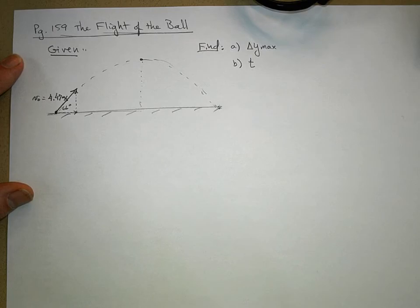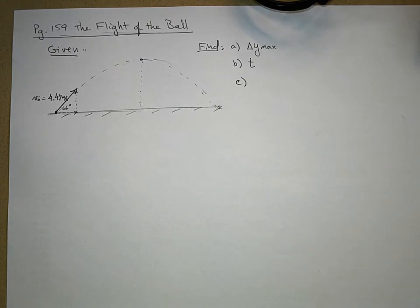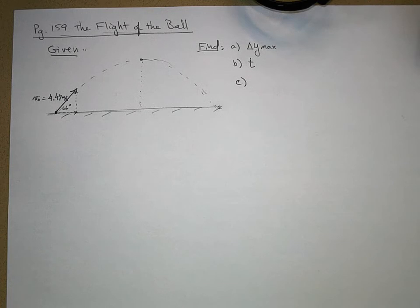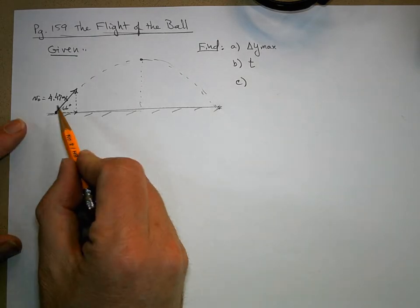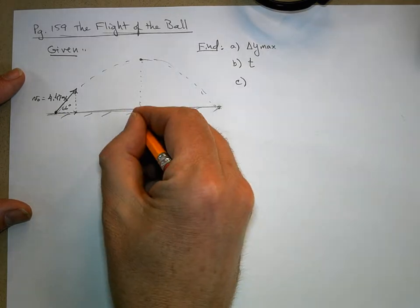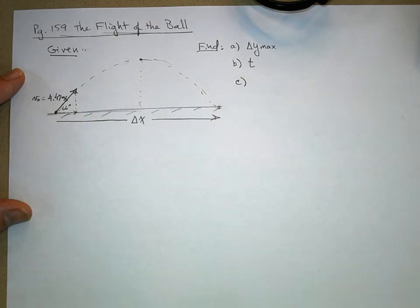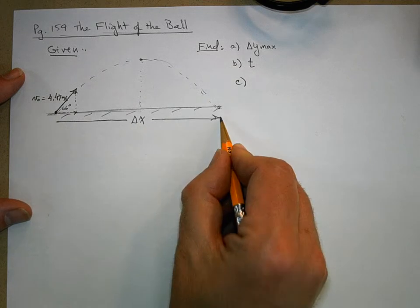For Part C, we want the range. The book on page 158 defines the range r as the horizontal distance the projectile travels — from the launch point over to where it lands. I call that delta_x, the horizontal displacement. It starts here and goes out to here.